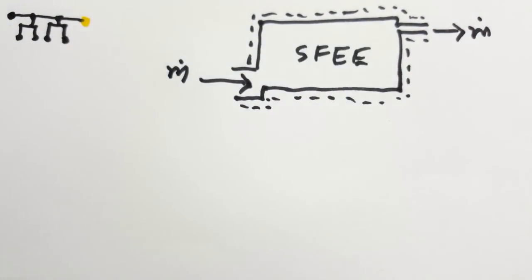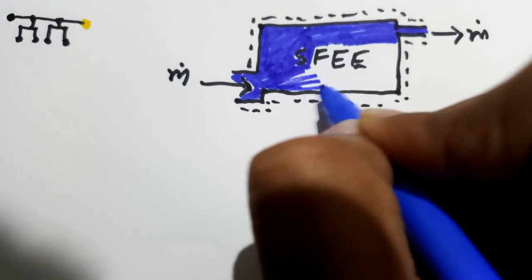The major application of the first law of thermodynamics is to analyze the flow of mass across an open system which is done by the classic steady flow energy equation.